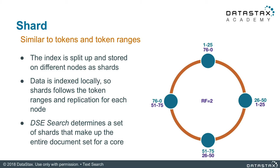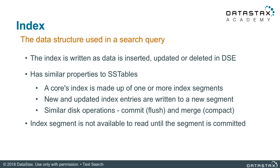Data is indexed locally, so shards map the token ranges and replicas for each node. DSE search determines the minimal set of shards that make up the entire document set for an index. Your index is the data structure utilized in a search query and defines the structure and behavior of the search functionality. Index data is written as data is inserted, updated, or deleted in DSE.